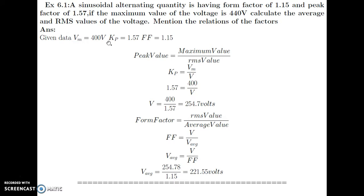Vm is equal to 400 Volts. The peak factor Kp is given as 1.57 and form factor FF is given as 1.15. The peak factor is defined as maximum value upon RMS value, so Kp equals Vm upon V. With Vm equal to 400 and Kp equal to 1.57, V (RMS) is calculated as 400 divided by 1.57, which gives 254.78 Volts.